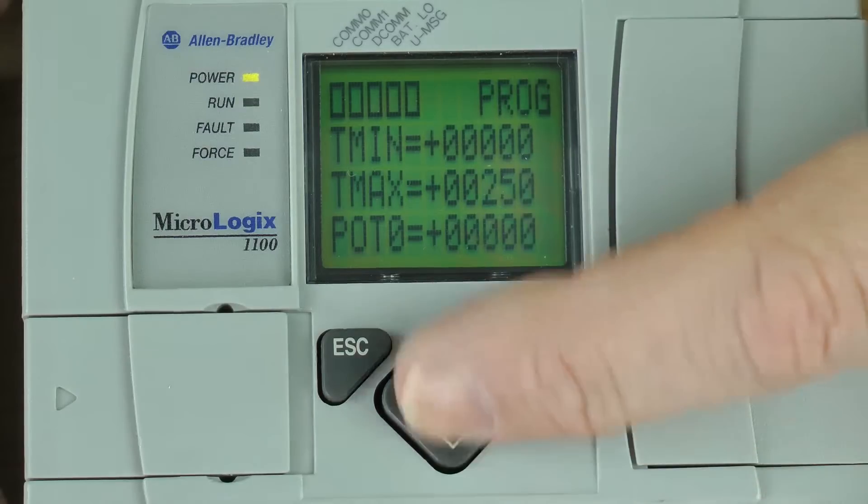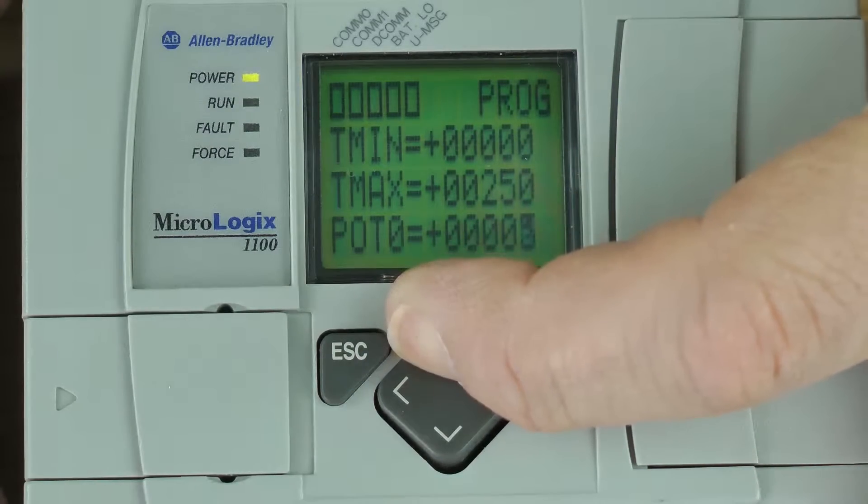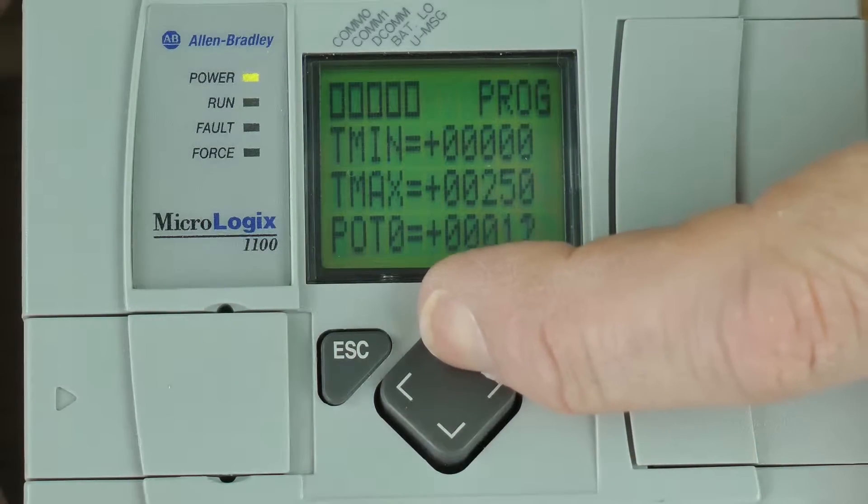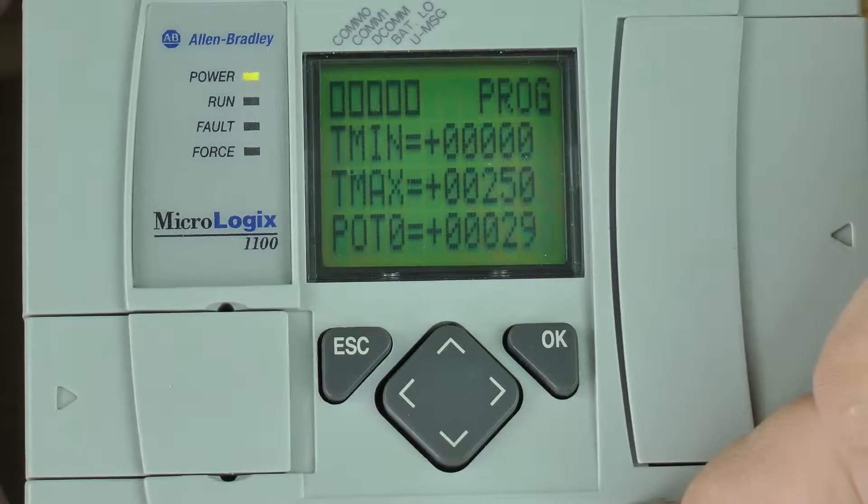So I'm going to hold down the up arrow key to change the value of pot zero. Here you can see I've changed it to 11. I'm going to hold down the up arrow key some more, and now you can see the value is 29.